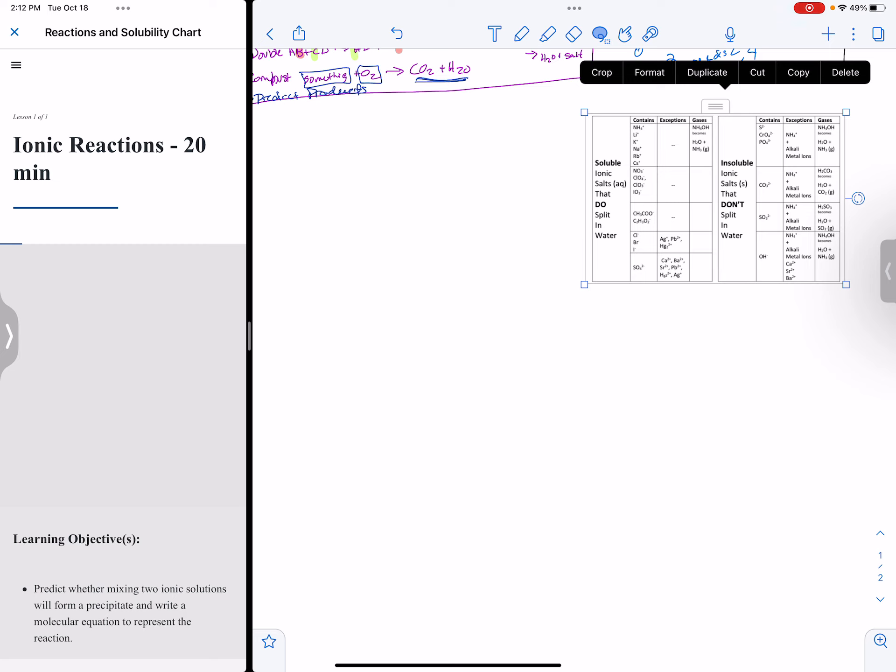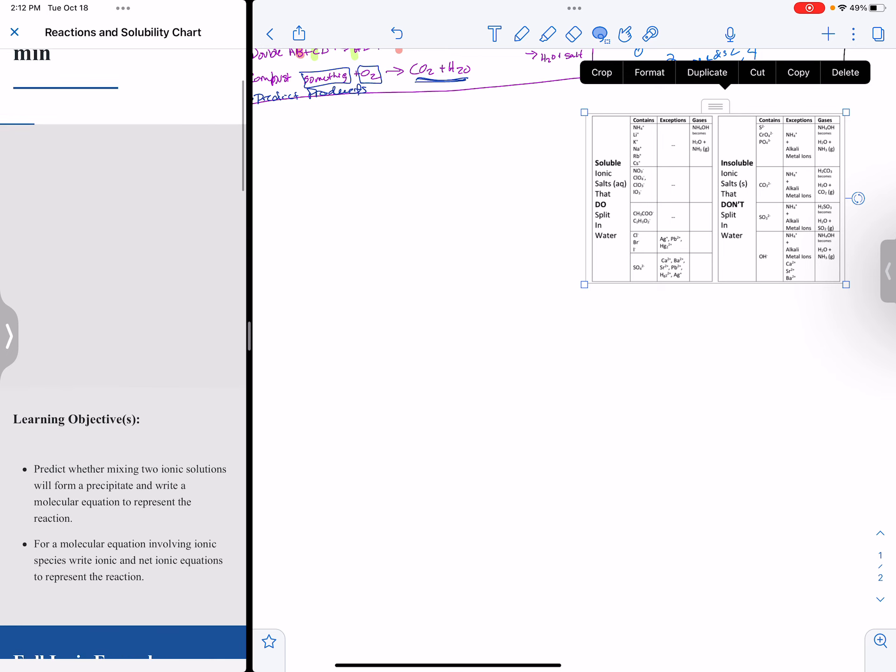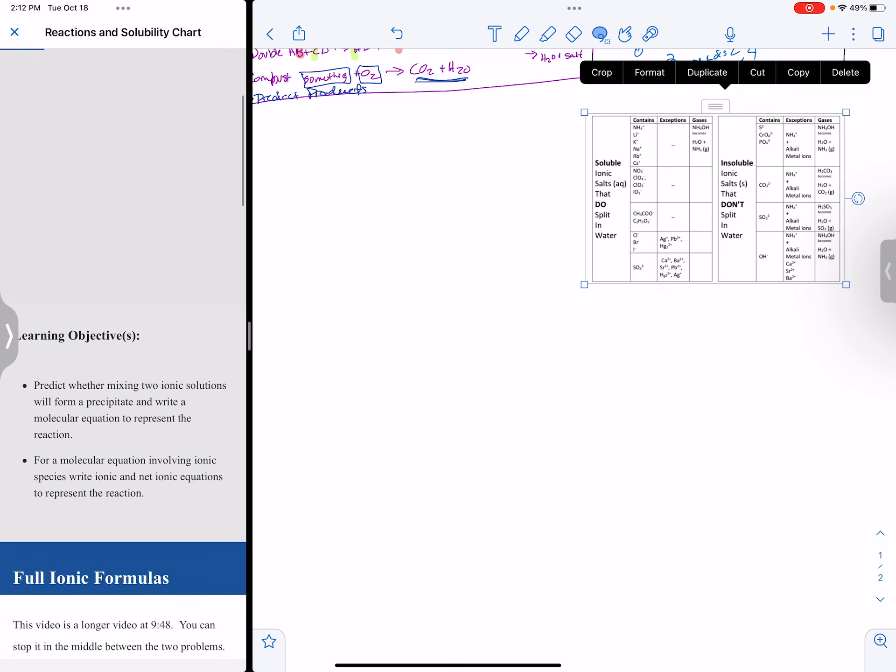So instead of rewriting it, I'd probably just print it again. I might even be tempted to tape it onto my final copy. The first section is ionic reactions and learning objectives. When mixing two ionics, predict if it will form a precipitate, write a reaction to represent it, and be able to write the ionic and then net ionics.